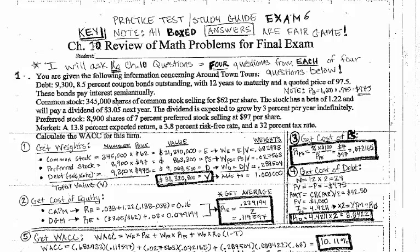Now that you've got those three costs, you go down and plug and chug. Multiply the weight of equity times the cost of equity, the weight of preferred stock times the cost of preferred stock, and the weight of debt times the pre-tax cost of debt — but be careful: that last term also needs to be multiplied by 1 minus T. If the tax rate is 32%, that means you multiply by 68%. Put all that information in the equation the right way, add those three sections together, and you're going to get 10.11% for the Weighted Average Cost of Capital. That was just a whole lot of this class wrapped up into one problem — that's why I save it for the final exam.